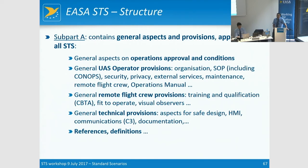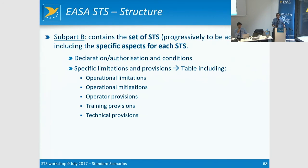Subpart A includes all the general aspects for the elements I have described — operational approval conditions, UAS operator provisions (which will also include aspects on security and privacy as described before), remote flight crew provisions, technical provisions, and some common elements like references and definitions. Then in subpart B, as I said, it will contain the full set of standard scenarios and all specific aspects that pertain to each one.